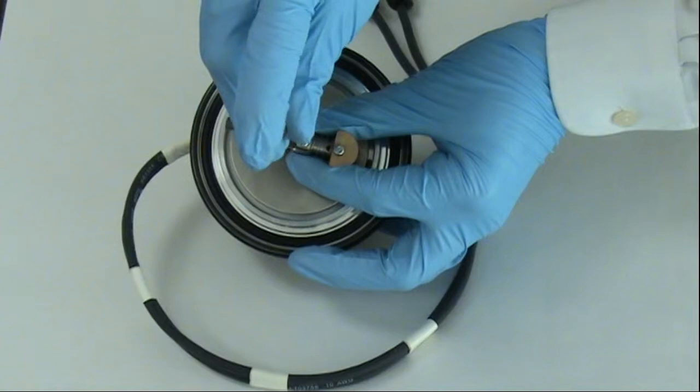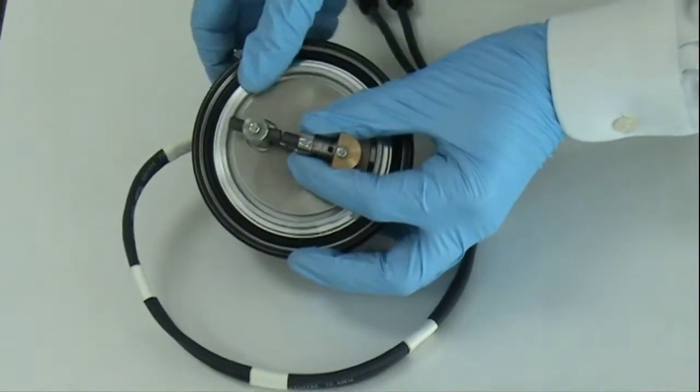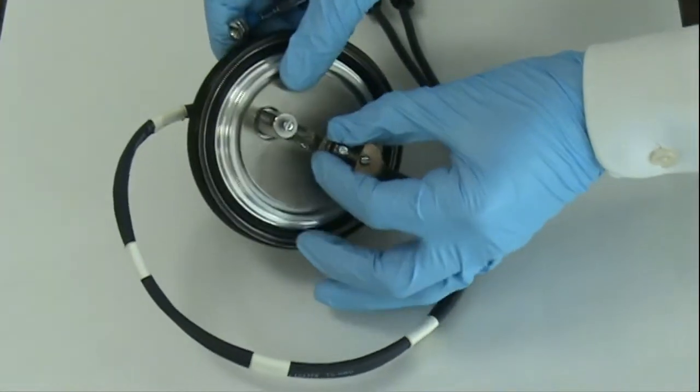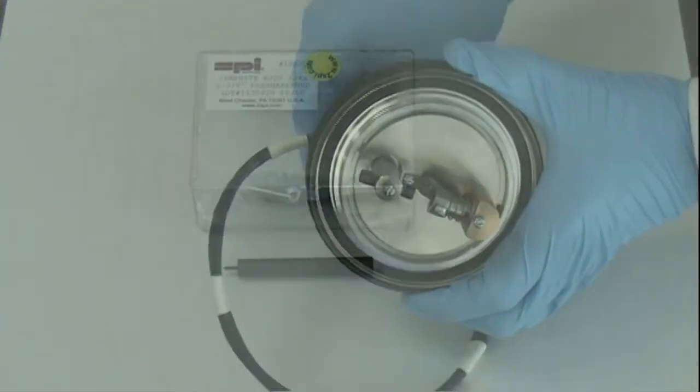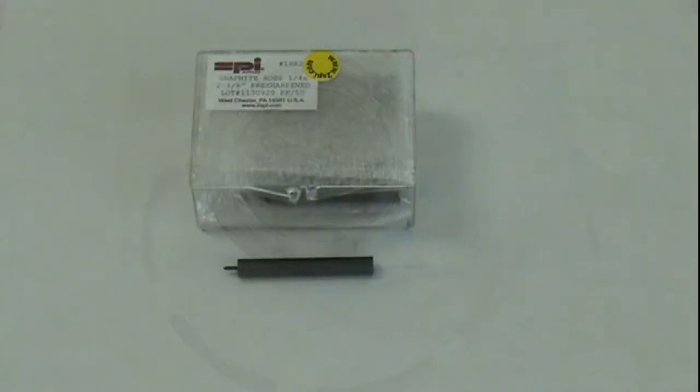A new rod with a sharpened point can now be inserted. We suggest our SPI Supplies pre-sharpened carbon rods, or you may sharpen your own point with our standard carbon rod product and carbon rod sharpener. The rod head takes a one-fourth inch diameter rod with a length of approximately 30 millimeters.